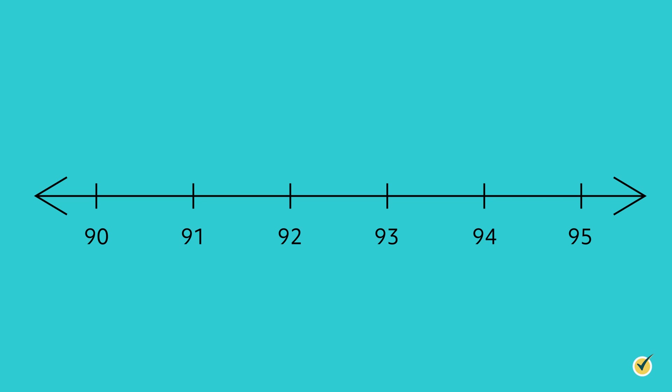Number lines can be used to represent a specific number. In the example we just mentioned, we can use the number line to represent a test grade of 94 by putting a dot above the number, like this.